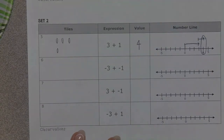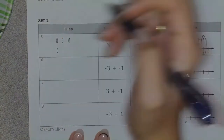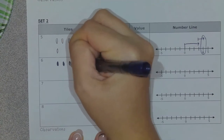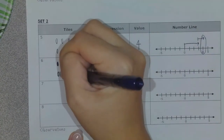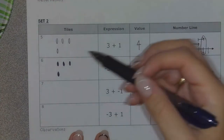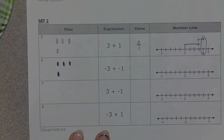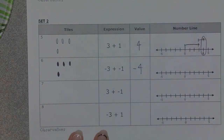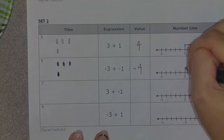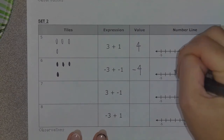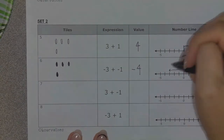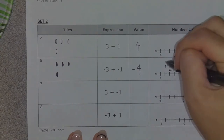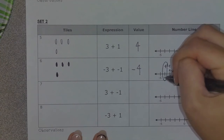Our next expression is negative three plus negative one. Again, it's all negatives — I don't have any zero pairs to make — so this just gives me a value of negative four. I'm going to start at zero. Since it's a negative three, I'm going to move three spaces to the left. Then add negative one, so move one space to the left. And it lands at negative four.